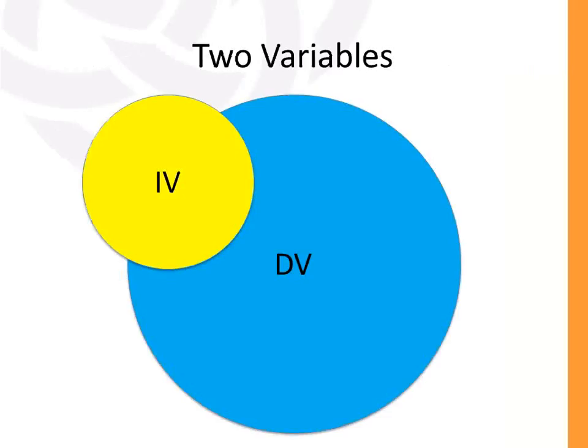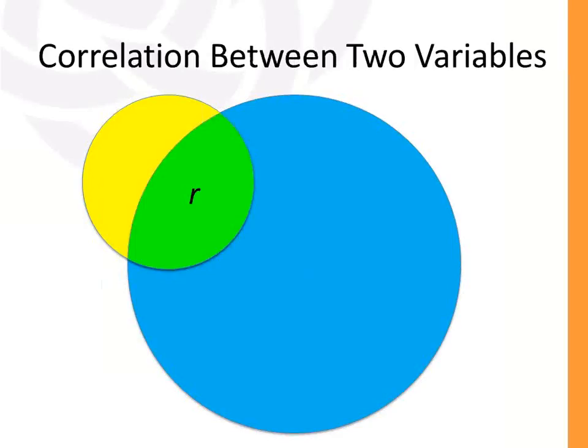Step three is conducting the analysis in SPSS. Before that, let's look at how this all plays out visually. You've got your independent variable and dependent variable — think of the area within each circle as the variation within each variable. The green region represents the correlation between the two variables. You would probably see a low to moderate correlation in this diagram, though these are not to scale.